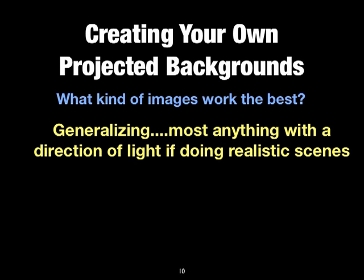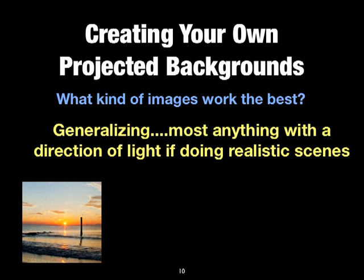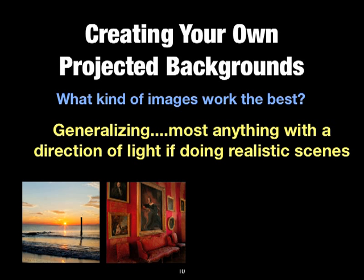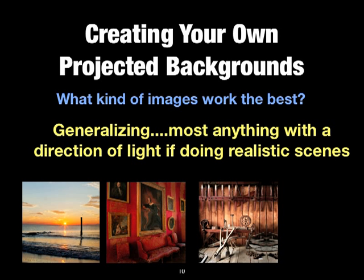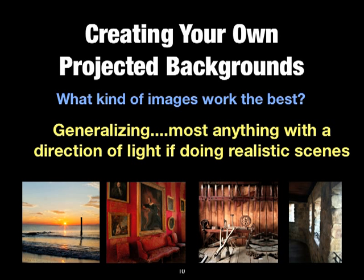Most anything with a direction of light works for realistic scenes. We have a sunrise at Tybee Island, Georgia — a beautiful sunrise. Here is a beautiful interior of someone's home or maybe a museum with artwork. Here we have a workshop — look at the direction of light, you have shadows. That makes a great background. You might put an old man with a gray beard and working tools in his hands in this background. Very believable. And then you have outdoor or indoor pictures with light coming through windows, which gives you directional light — match that and people are really happy with the results.